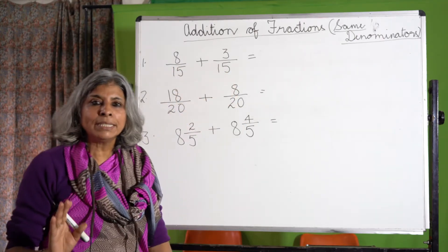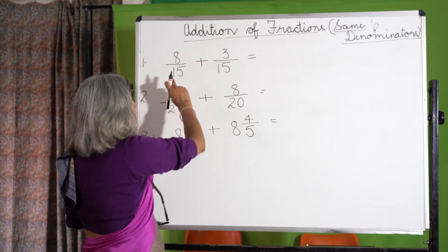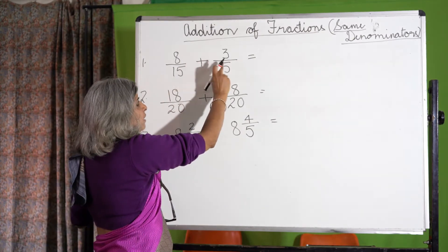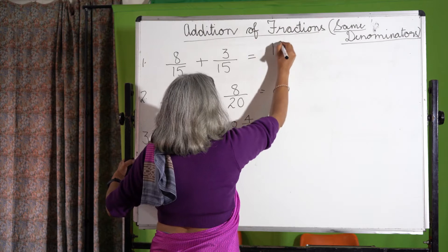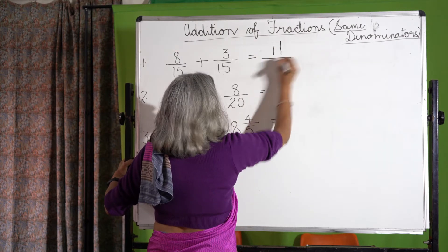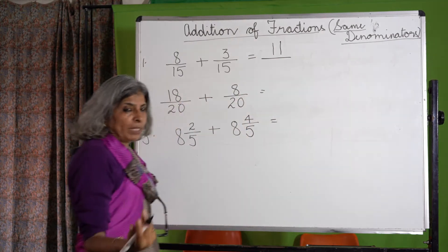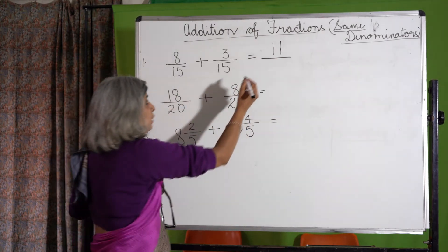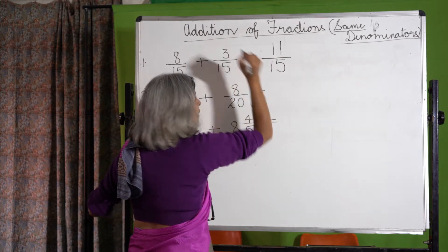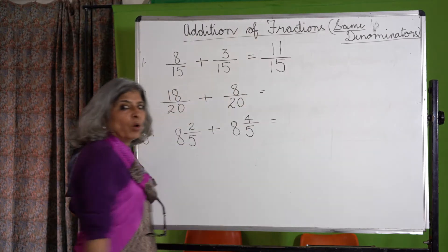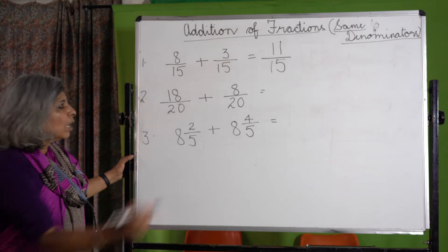So what do we do? 8 plus 3 is 11, upon 15. That means the denominator is the same — we don't add the denominator. So our answer becomes 11 upon 15.